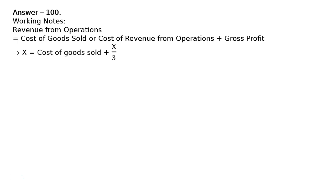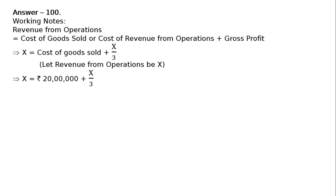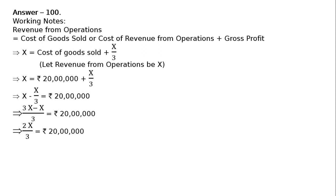Now find out the value of x by taking cost of goods sold as given in the question. Let revenue from operations be x. This implies: x = Rs 20 lakhs + x/3, which implies x − x/3 = Rs 20 lakhs, which implies (3x − x)/3 = Rs 20 lakhs, which implies 2x/3 = Rs 20 lakhs.